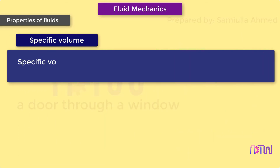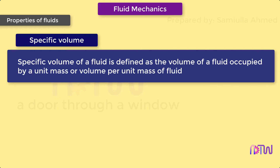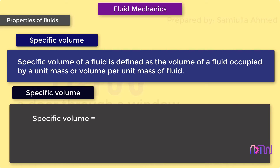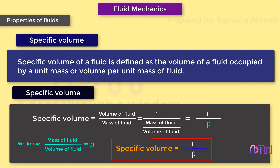Specific volume of a fluid is defined as the volume of a fluid occupied by a unit mass, or volume per unit mass of fluid. Mathematically, specific volume equals volume of fluid divided by mass of fluid. This can be rewritten as one upon density, which is rho. Thus, specific volume is the reciprocal of mass density, and it is expressed as meter cube per kilogram.